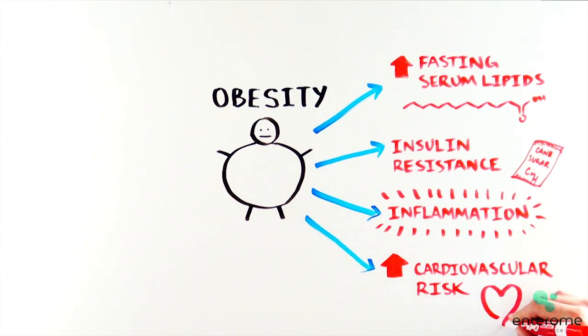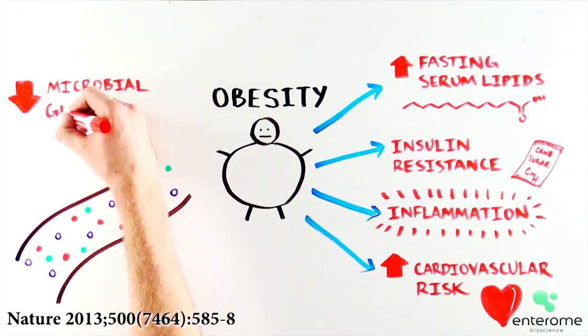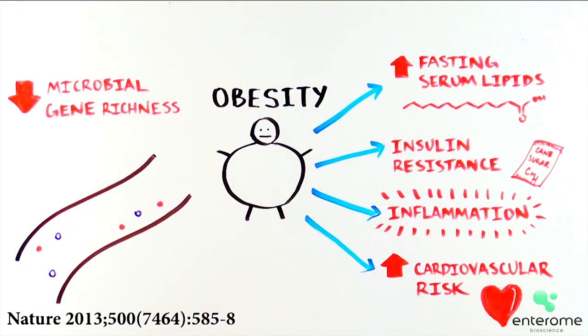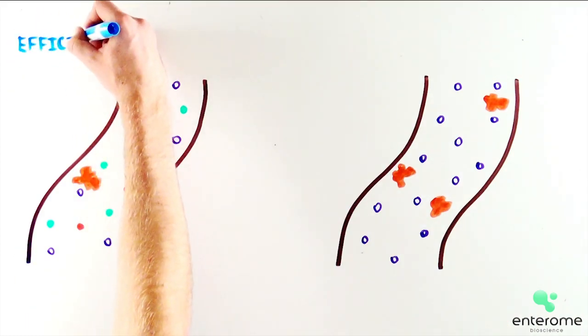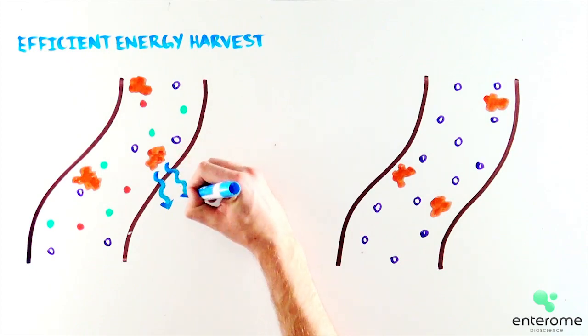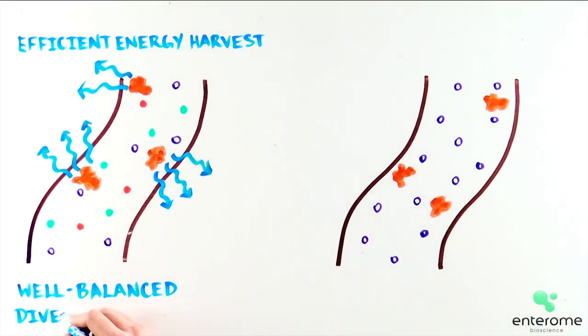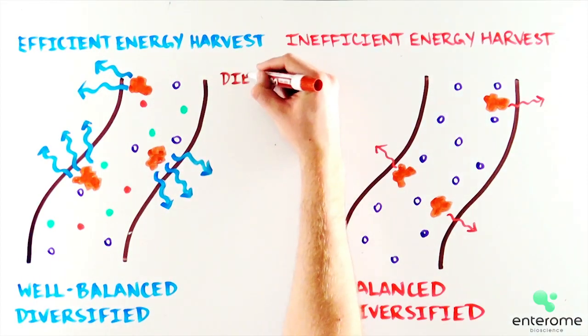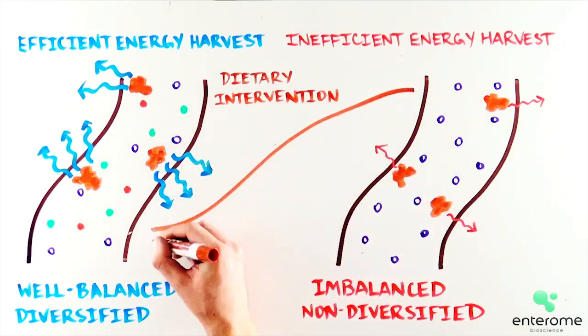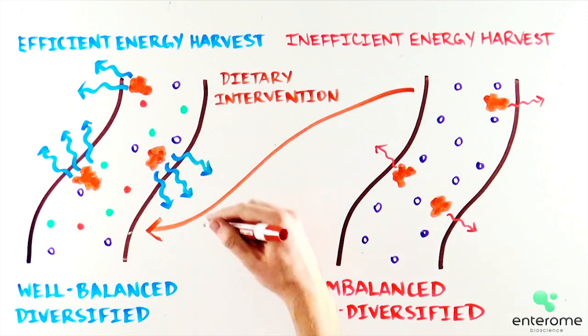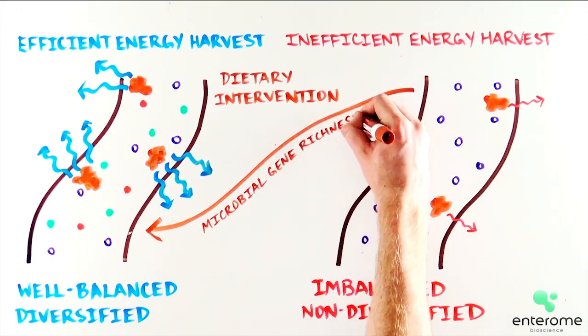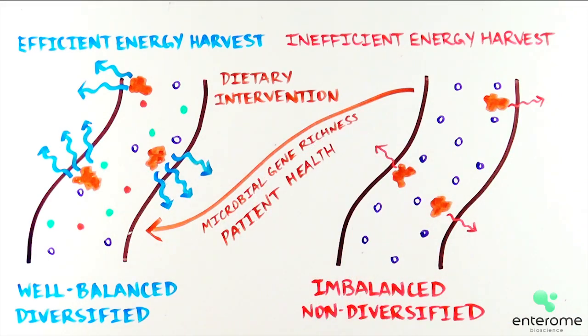But obesity is also characterized by reduced gut microbial gene richness. The efficacy of energy harvest from food is determined by a well-balanced and diversified gut microbiota. Specific dietary interventions can impact the composition of the microbiome and, by consequence, improve the gut microbial gene richness and overall patient health.